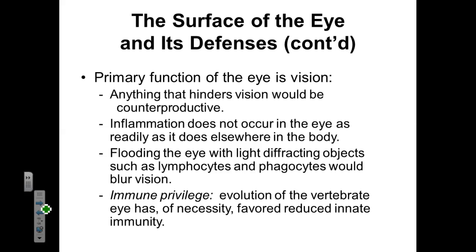Our eye has what we call immune privilege. This means that we have reduced innate immunity in our eye because we want to maximize vision. We have fewer white blood cells making up that secondary line of defense moving through our eye because those white blood cells would obscure our vision.